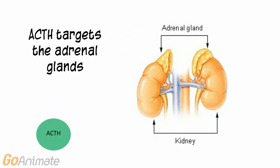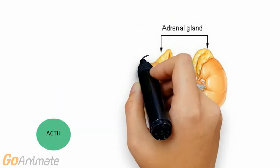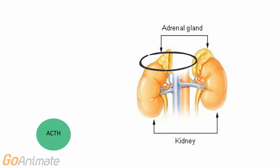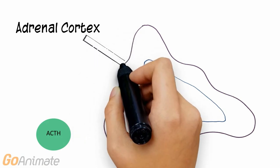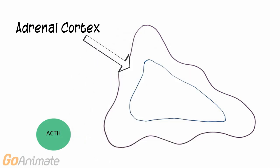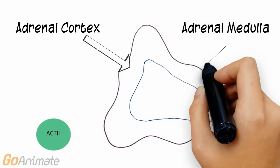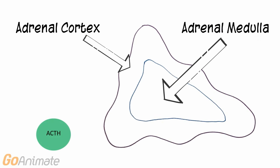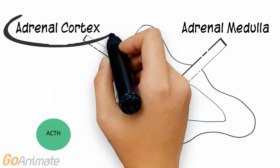ACTH targets the adrenal glands. The adrenal glands are located on top of each kidney. The adrenal glands have two main parts, an outer cortex and an inner medulla. Both parts secrete different types of hormones.